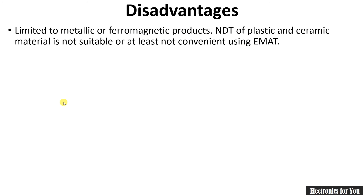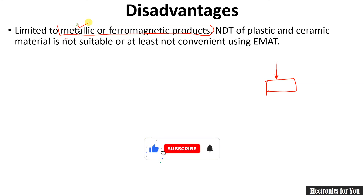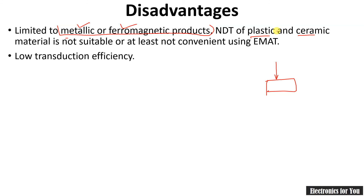Now let us see the disadvantages. EMAT is limited to metallic or ferromagnetic products. Since we are using magnetic and electromagnetic force, only metallic or ferromagnetic products are suitable. Plastics, ceramics, and glass cannot be measured — if you want to measure thickness for these materials, you should use ultrasonic thickness measurement instead.